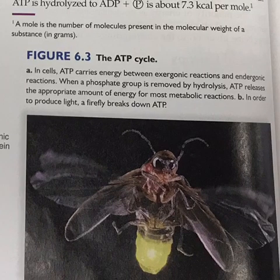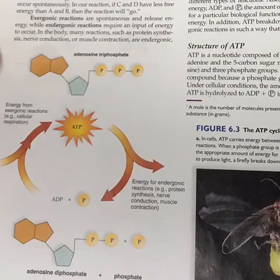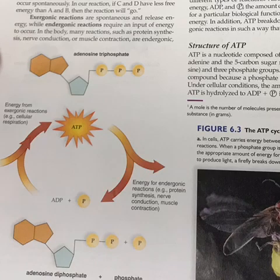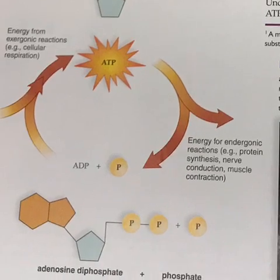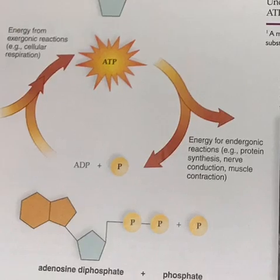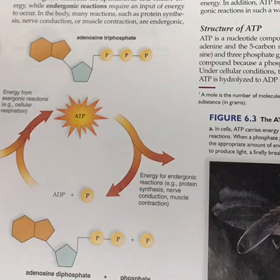The ATP cycle: in cells, ATP carries energy between exergonic reactions and endergonic reactions. When a phosphate group is removed by hydrolysis, ATP releases the appropriate amount of energy for most metabolic reactions. In order to produce light, a firefly breaks down ATP. In this figure, adenosine triphosphate shows the nitrogen group adenine, the sugar, and three phosphate molecules. Energy from an endergonic reaction like protein synthesis, nerve conduction, or muscle contraction releases one of the phosphate molecules, and energy is released when the phosphate molecule is hydrolyzed. Energy from an exergonic reaction, such as cellular respiration, can add a phosphate molecule back onto the ADP molecule to make ATP again.